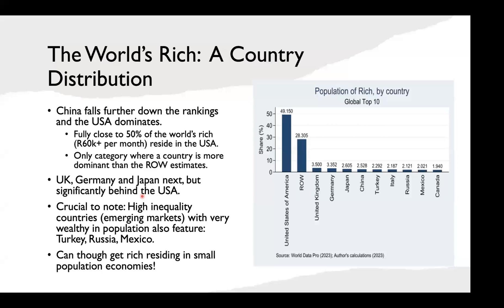An important nuance: high-inequality countries — Turkey, Mexico, Russia, and to some extent China — appear in the rich category due to having small but very wealthy populations by definition. This is what high inequality means. So as a luxury goods manufacturer, you shouldn't be put off by volatility in markets like Turkey or Russia, because those high-spending consumers are still present.